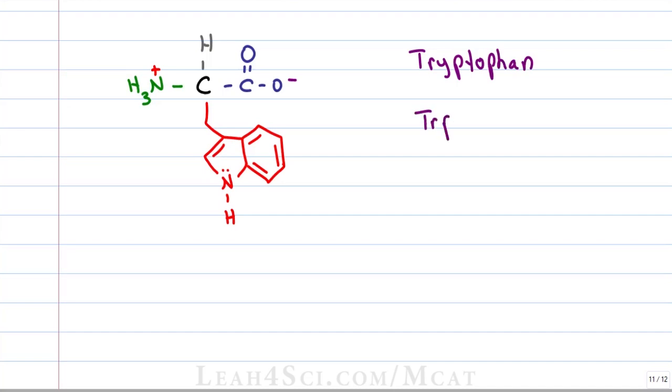Tryptophan, TRP or W has the largest and most complex R group. I know that it's hard to draw but remember the MCAT is multiple choice. So as long as you recognize that this is the only amino acid with a bicycloaromatic compound, you'll know that it's tryptophan.